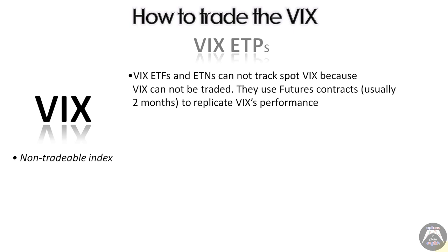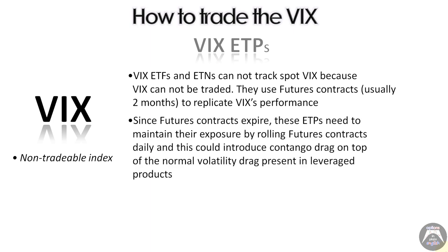Since the futures contracts expire, these ETPs need to maintain their exposure by rolling futures contracts daily. This can introduce contango drag on top of the normal volatility drag present in leveraged products. When you have something designed to replicate twice the daily performance and there's a lot of volatility over time, your results are going to deteriorate because of the math of compounding leveraged returns.